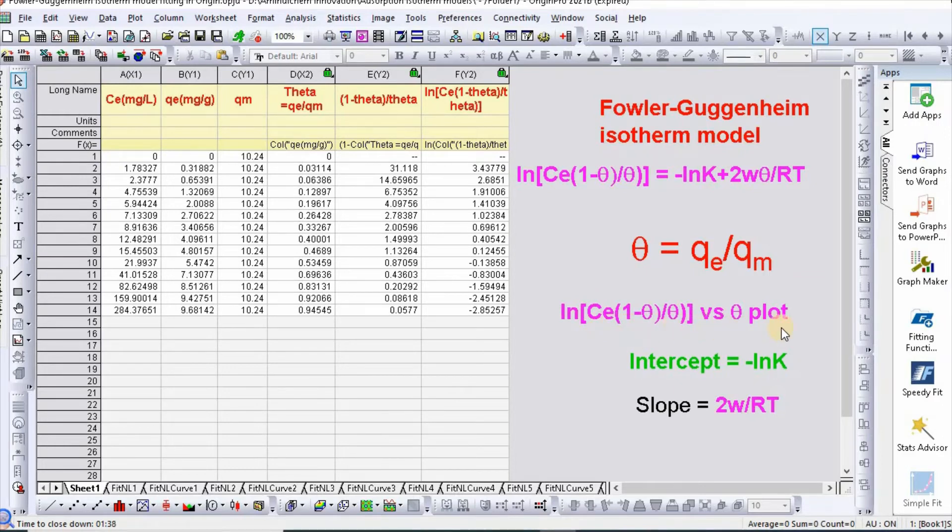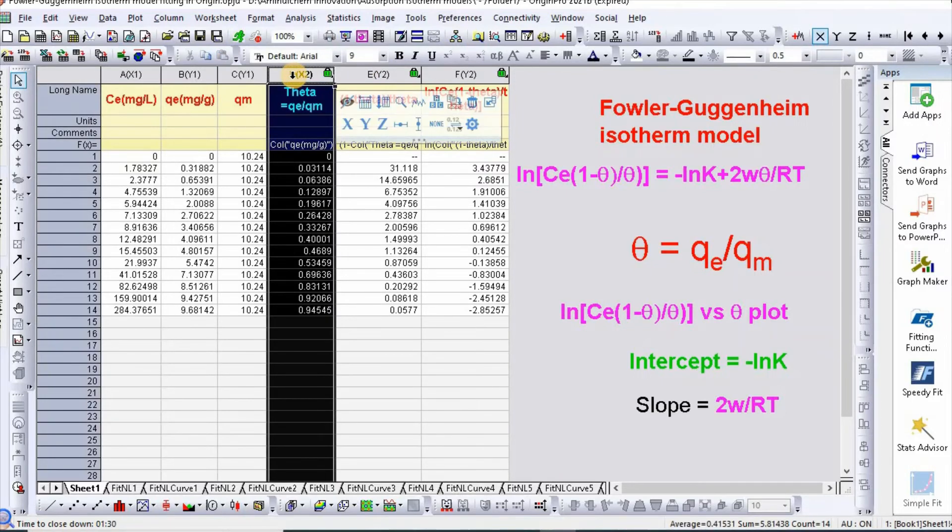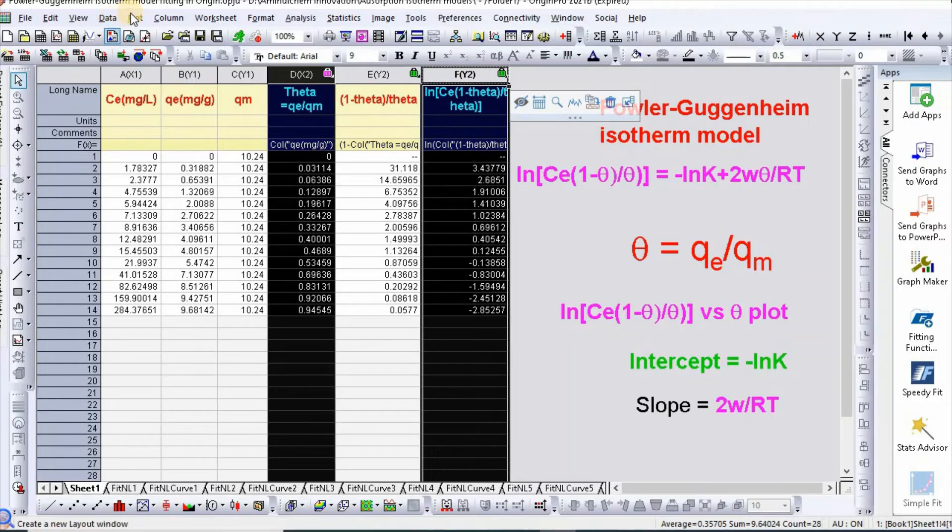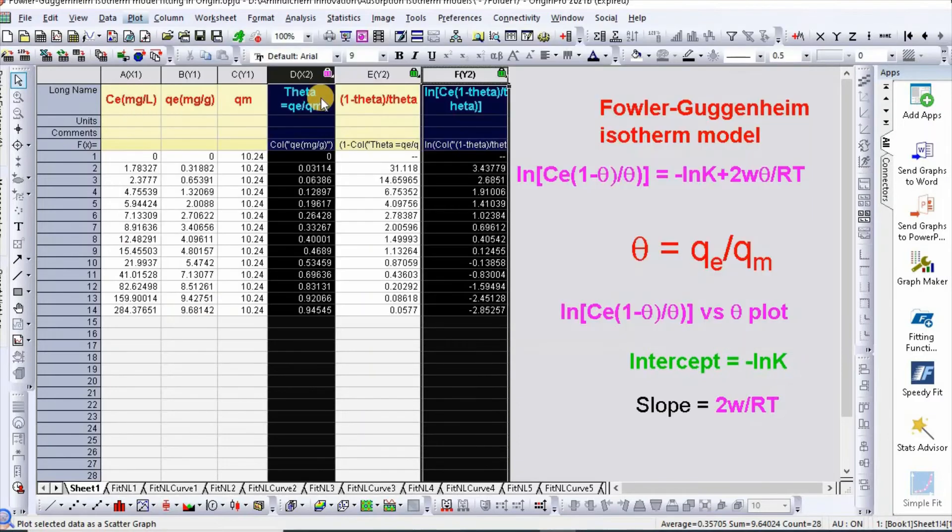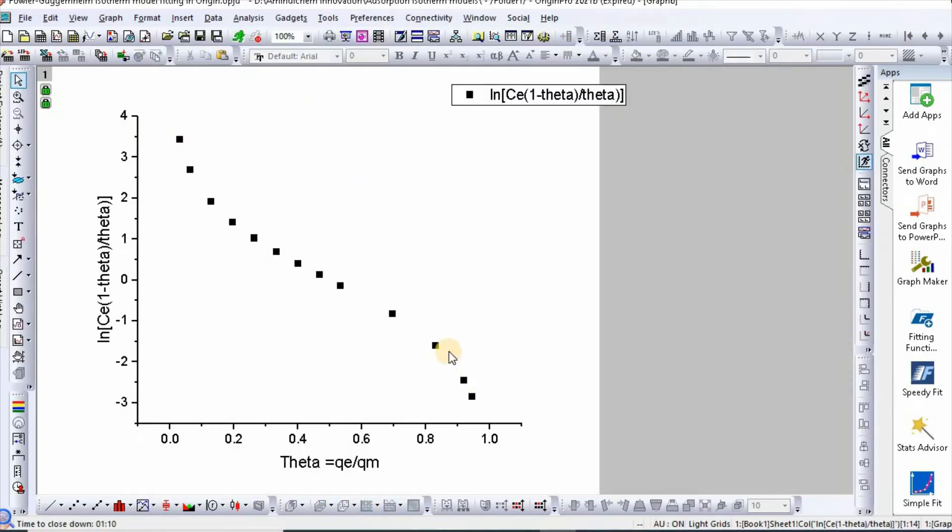Now you need to plot ln[Ce(1-θ)]/θ versus θ. So you need to select this as x-axis. Select this and this, then go to plot, then scatter. So here is your plot.